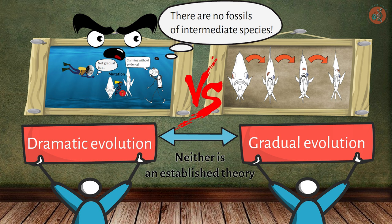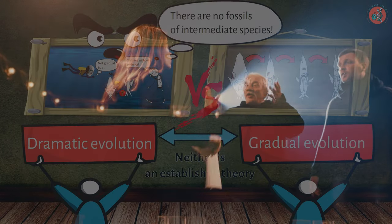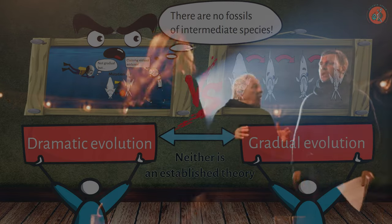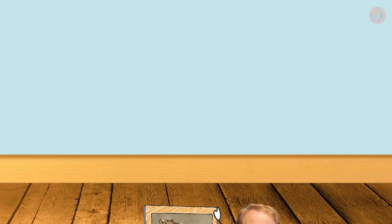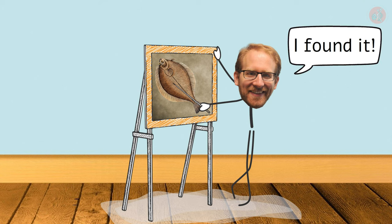Because of this, the evolution of the flounder's eye has been a subject of extensive debate among evolutionary biologists. Then, in 2008, a graduate student at the University of Chicago named Friedman made a significant discovery that shed light on the secret of the flounder's evolutionary process.